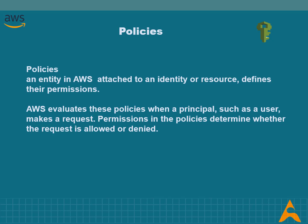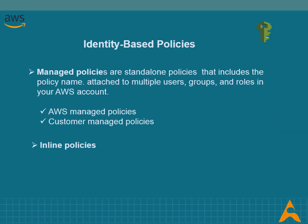Permissions are granted based on policies. A policy is an entity in AWS that, when attached to an identity or resource, defines their permissions. AWS evaluates these policies when a principal such as a user makes a request; the permissions in the policies determine whether the request is allowed or denied. There are two types of policies: identity-based policies and resource-based policies.